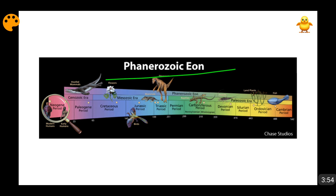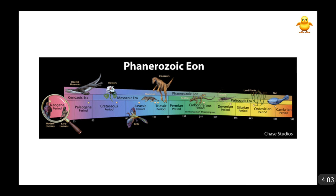First comes the Paleozoic Era, then the Mesozoic Era, then the Cenozoic Era. Under the Paleozoic Era come the Cambrian Period, Ordovician Period, Silurian Period, Devonian Period, Carboniferous Period, and Permian Period. Under the Mesozoic Era come the Triassic Period, Jurassic Period, and Cretaceous Period. Under the Cenozoic Era there are many more classifications.